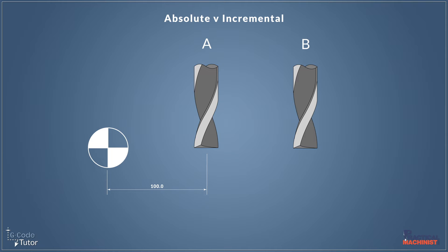So our first move was 100 millimetres from the datum to the tool, and then to move the tool a further 100 millimetres away from the datum we would give a position of 200 millimetres. This is because all dimensions in absolute come from the datum position.